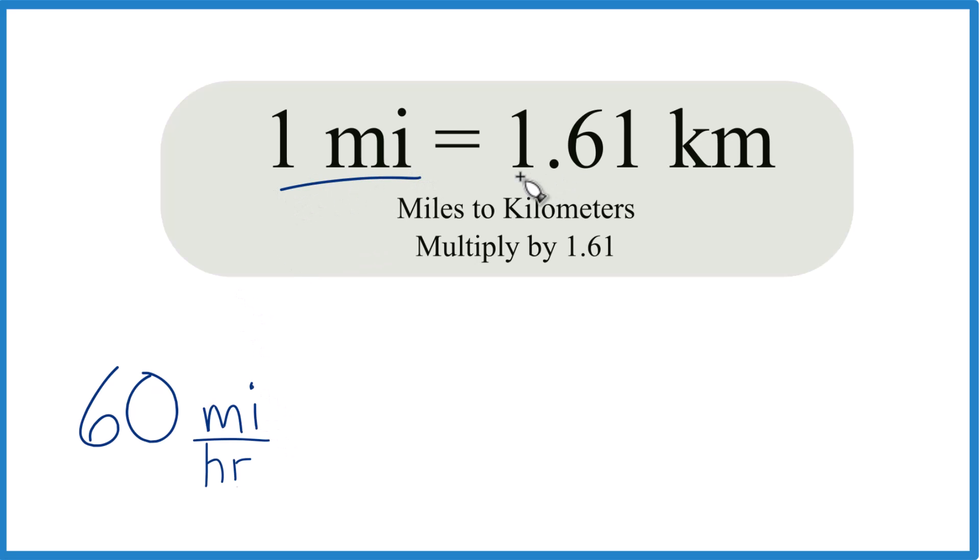One mile equals 1.61 kilometers. That's rounded. If you need more digits, you could go 1.60934.